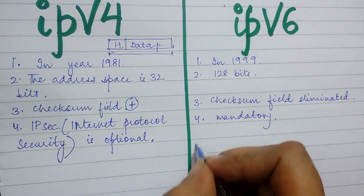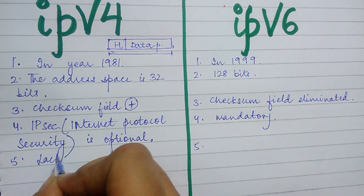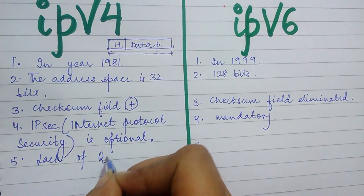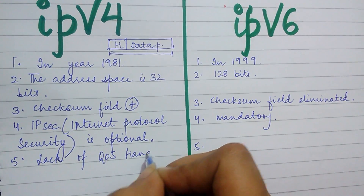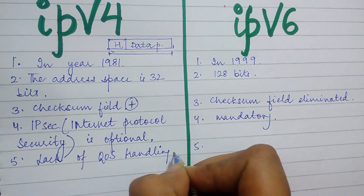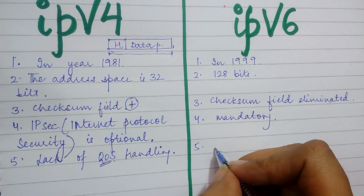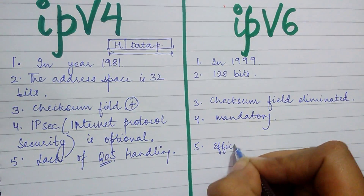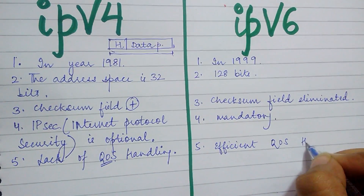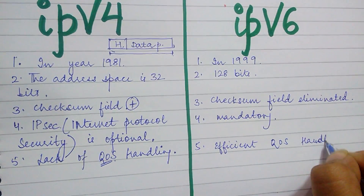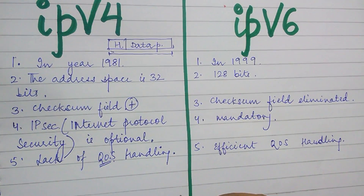The last point is that there is a lack of QoS handling in IPv4. QoS stands for quality of service, and there is efficient and good QoS handling in IPv6. Thank you.